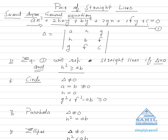For the equation to represent a pair of straight lines: if delta equals zero and h² ≥ ab, then the general second degree equation will represent a pair of straight lines.